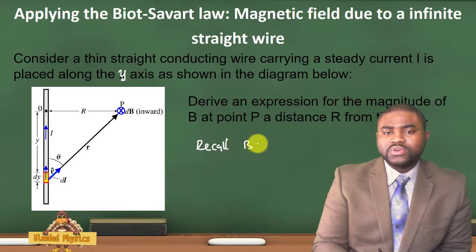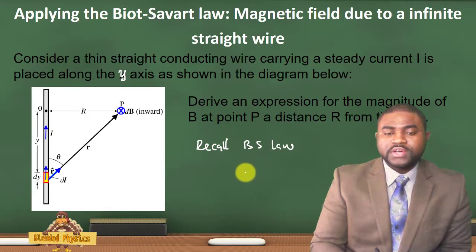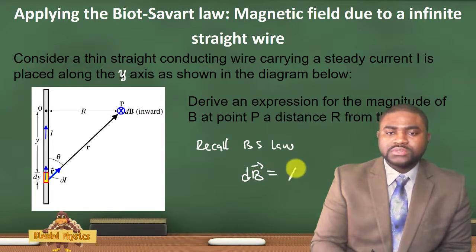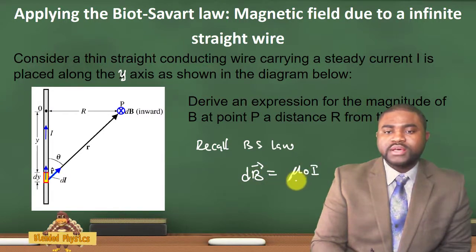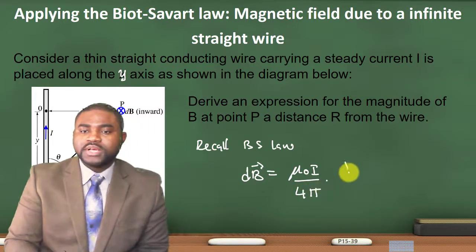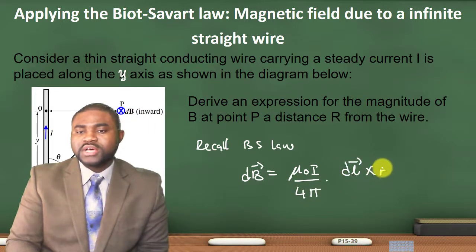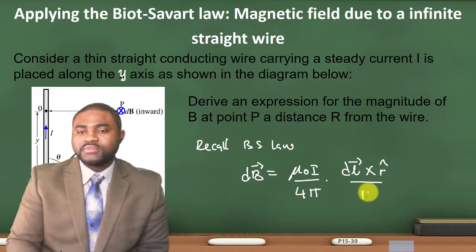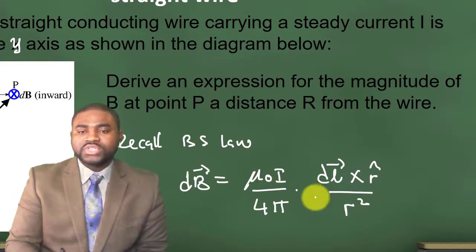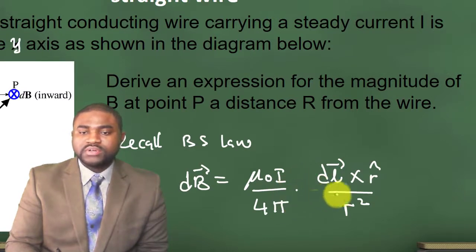Now recall, Biot-Savart Law basically states that dB is equal to μ₀I divided by 4π, multiplied by dl cross r̂, all divided by r squared. Now in order for us to evaluate this integral,